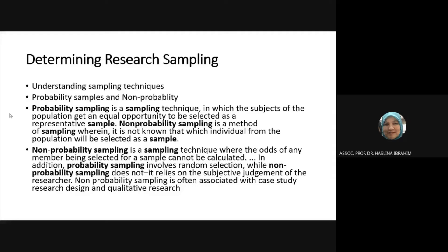Non-probability sampling is a sampling technique where the odds of any member being selected cannot be calculated. Probability sampling involves random selection while non-probability sampling does not — it does not take a random sampling method. It relies on the subjective judgment of the researcher. Non-probability sampling is also associated with case study research design and qualitative research.